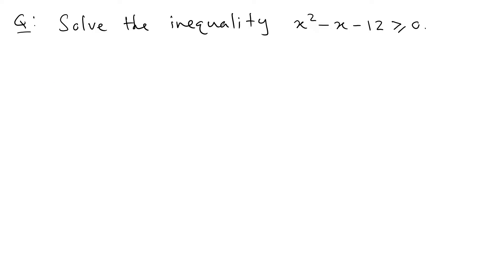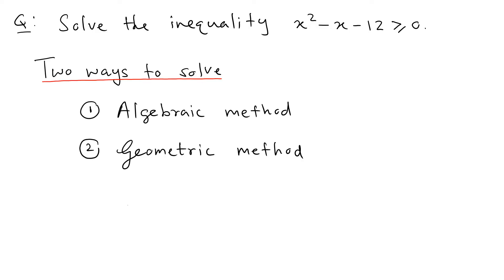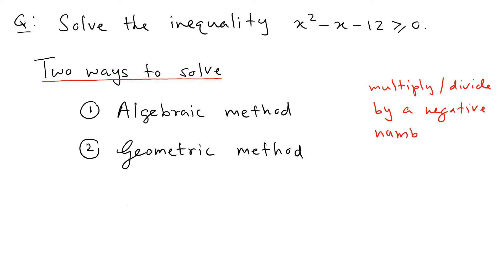There are two ways to solve such an inequality. The first and most common method is the algebraic method, which uses basic algebra. The only time you have to be careful is when you multiply or divide by a negative number — doing so will flip the inequality sign. Otherwise, all other steps are pretty much the same as solving an equation.